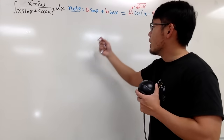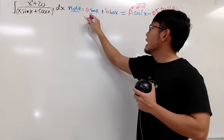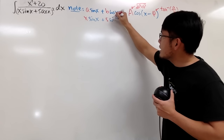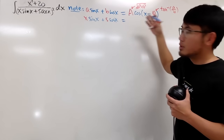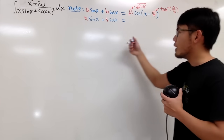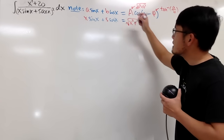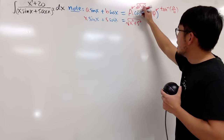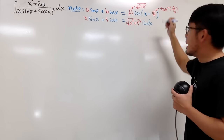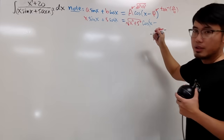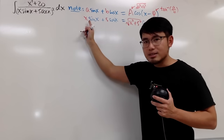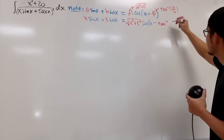Originally we had x·sin(x) plus 5·cos(x). Applying the theorem, capital A is just √(x² + 5²) = √(x² + 25), and then we have cosine of (x minus phi), where phi is the inverse tangent of x over 5.